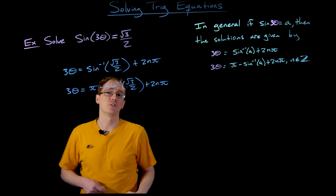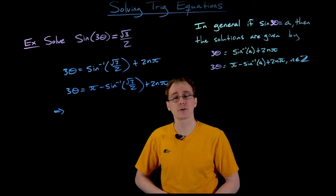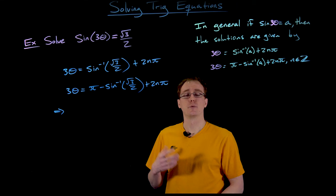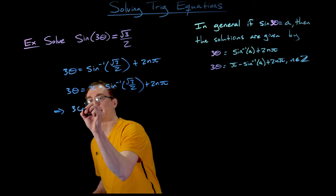We can simplify this a little bit further. The square root of 3 over 2 is one of those known points on our unit circle, so we can actually evaluate sine inverse of the square root of 3 over 2. Thinking back to our unit circle, sine inverse of the square root of 3 over 2 is equal to pi over 3. So we can simplify our two equations by replacing each of these sine inverses with pi over 3.